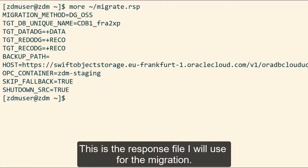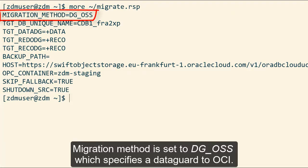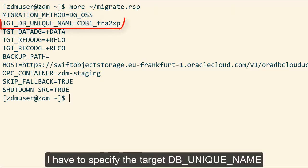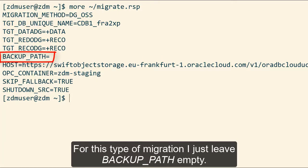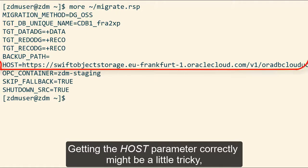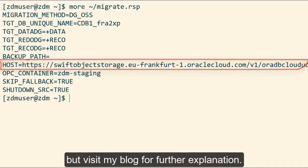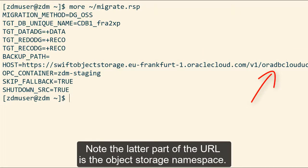This is the response file I used for the migration. The migration method is set to DGOSS, which specifies a Data Guard to OCI migration. I have to specify the target DB unique name, and since I'm using ASM I can just specify the disk groups. For this type of migration I'll just leave the backup path empty. Getting the host parameter correctly might be a little tricky — visit my blog for further explanation. Note that the latter part of the URL is the object storage namespace.